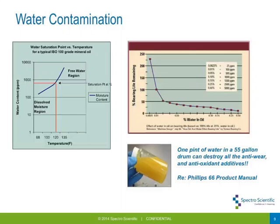Another common problem is water contamination. Water is a particular challenge because it can coexist in oil. Oil is hygroscopic, which means that if you leave an open bottle of oil out to the atmosphere, moisture will be absorbed into the oil due to weak electrostatic attraction, up to its saturation level. Above that point, if water is still present in the environment, it will come out as free water. We want to keep oil as dry as possible, because water in oil will cause premature wear, loss of viscosity, loss of load-carrying capability, and excessive heat.